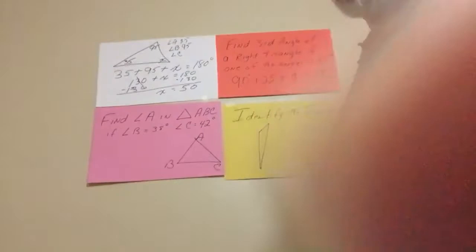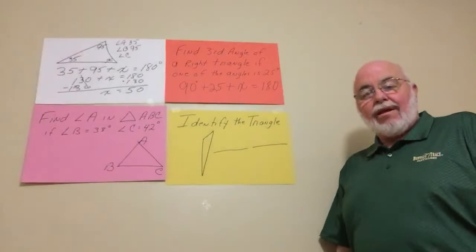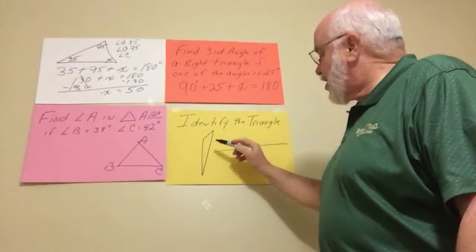All right, here's one of the things we had trouble with when we did our triangles before: identify the triangle. Remember, it's got to have two names, the type of angles and the type of sides.